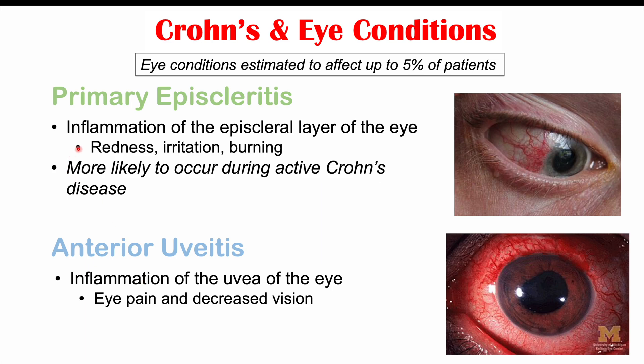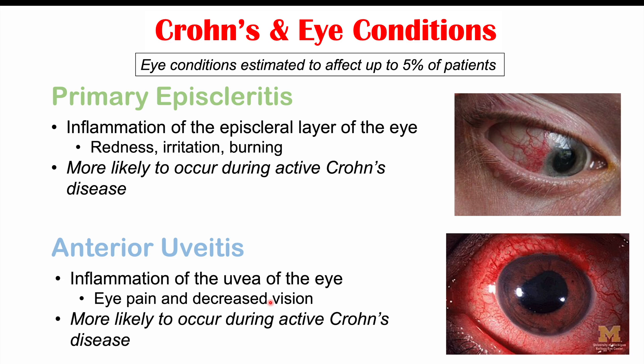In primary episcleritis, symptoms involve redness, irritation, and burning, whereas in anterior uveitis, it involves eye pain and decreased vision. Anterior uveitis is very important to recognize because of these signs and symptoms. Like primary episcleritis, anterior uveitis is more likely to occur during active Crohn's disease.